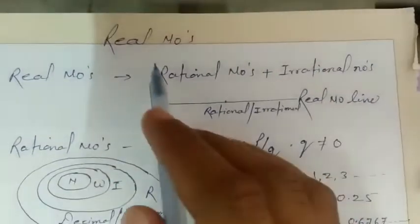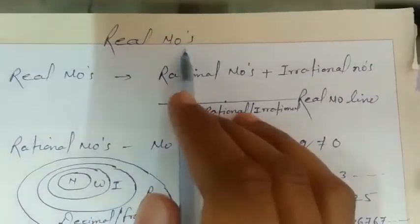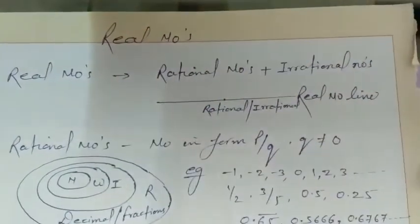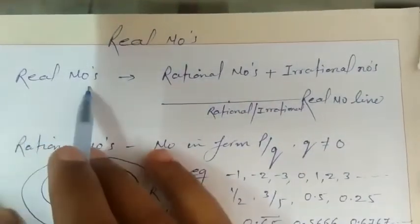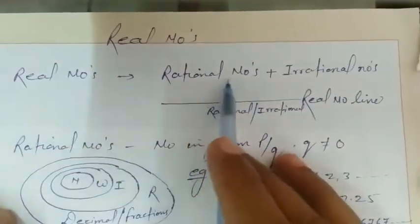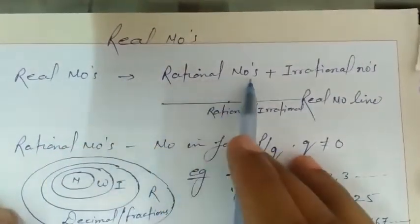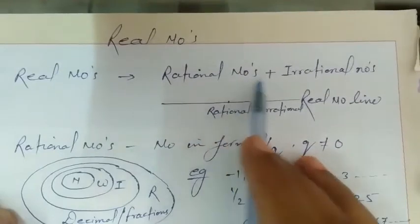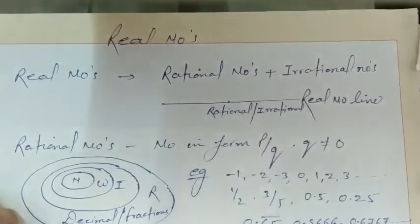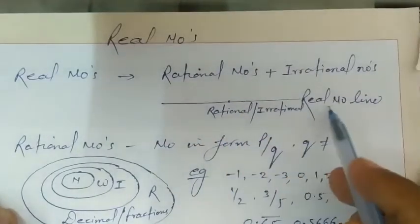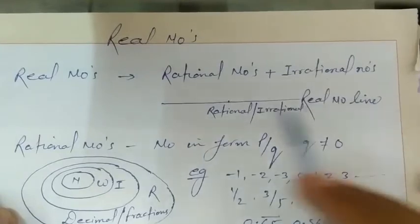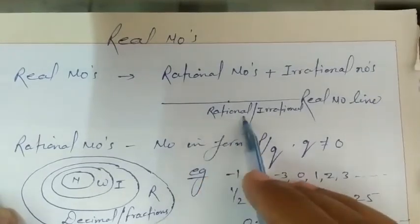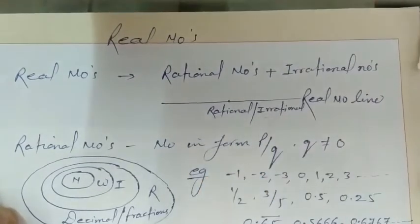Good morning. Today I am teaching you real numbers once again for your welfare. Real numbers are the combination of rational and irrational numbers. All the numbers on the real number line will be either rational or irrational.